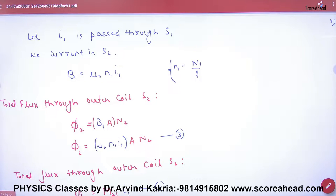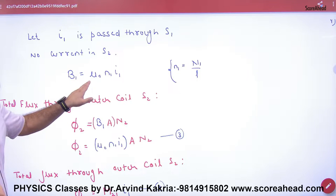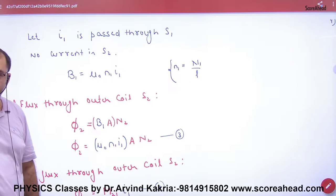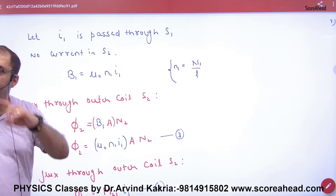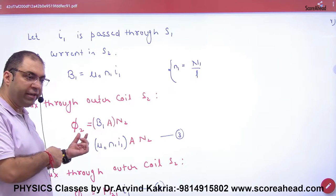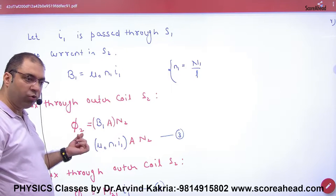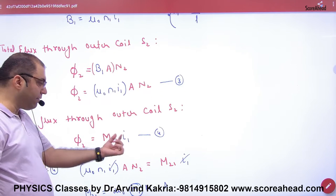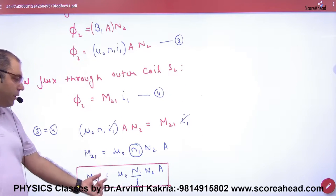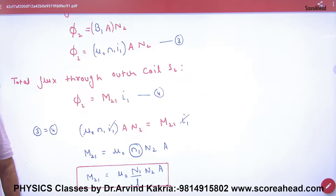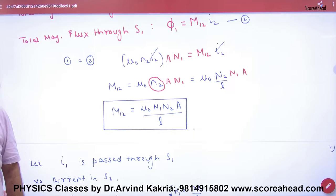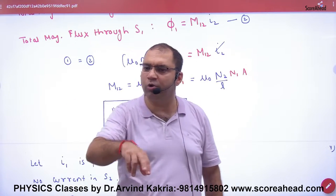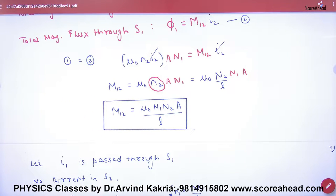Reverse it! Take μ₀ N₁ I₁ — now B is of S1, and S1 becomes primary. The flux change will be of S2 secondary, but B used will be of primary. So secondary S phi₂ has number of turns N2 and area of secondary. Putting B1's value in, and using φ = MI where I is of primary and flux is of secondary, equating both gives the same answer. So whether you pass current in either coil, the value of M comes out exactly the same.